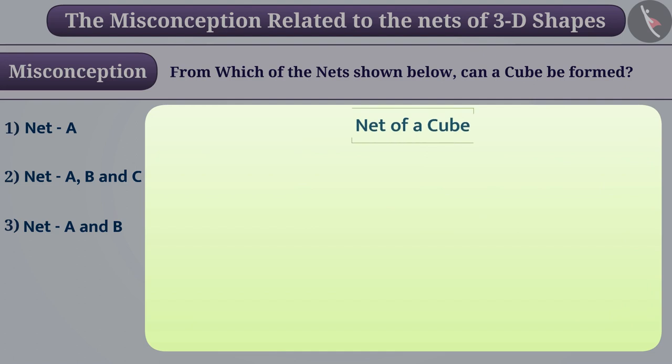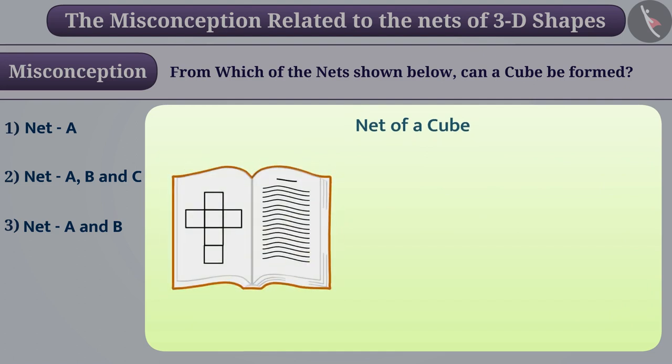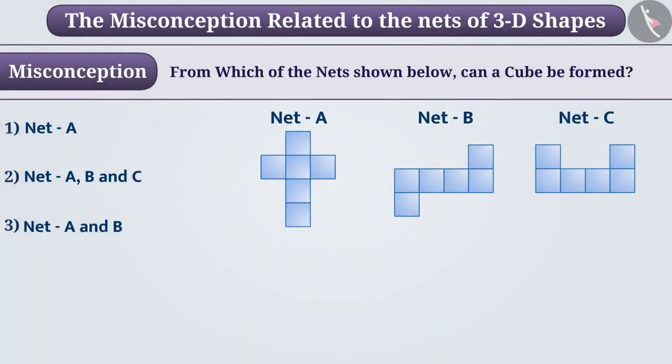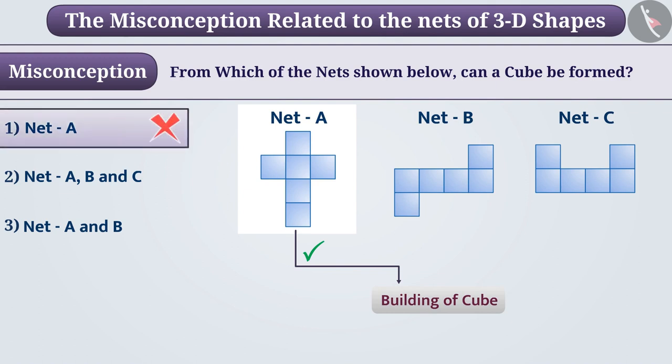The first net is often used in books to teach the cube net. And while teaching, it creates the misconception in children that a cube can be created only with this net. So they give option 1 as answer, which is a wrong answer.